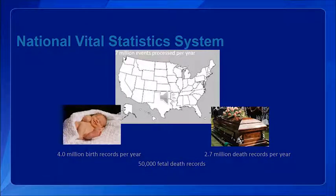The National Vital Statistics System is the oldest and most successful example of intergovernmental data sharing in public health, and the shared relationships, standards, and procedures form the mechanism by which NCHS collects and disseminates the nation's official vital statistics. These data are provided through contracts between NCHS and vital registration systems operated in the various jurisdictions legally responsible for the registration of vital events, including births, deaths, and fetal deaths.